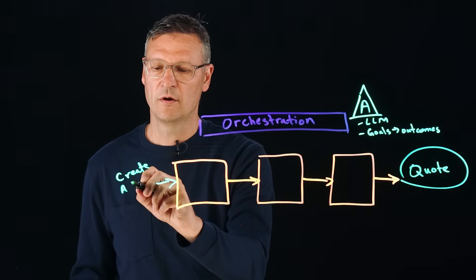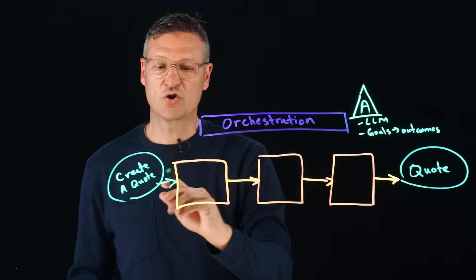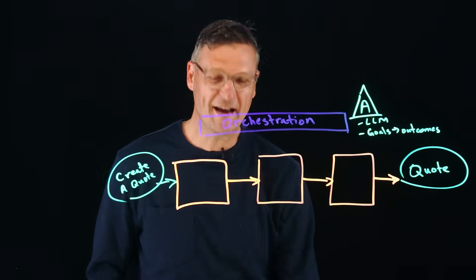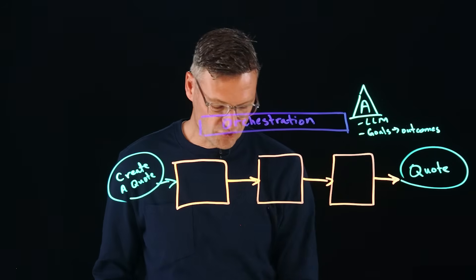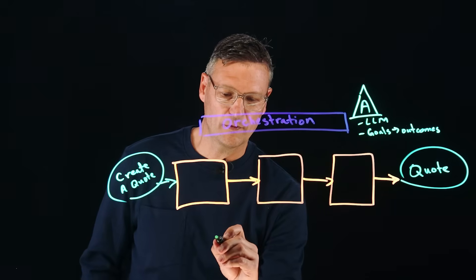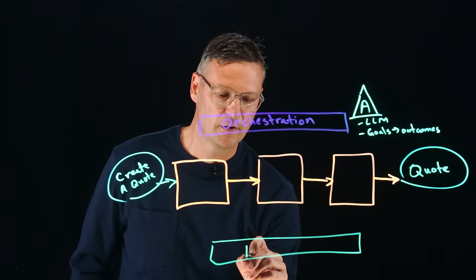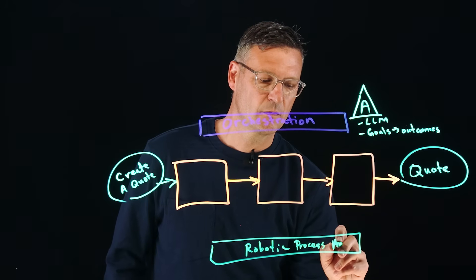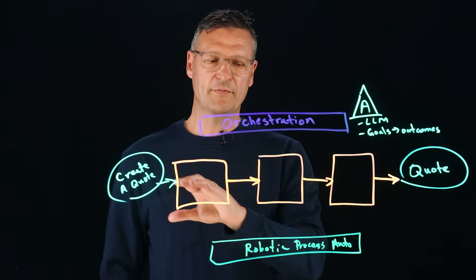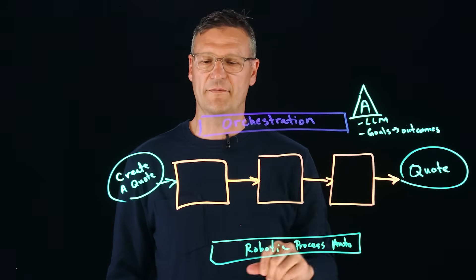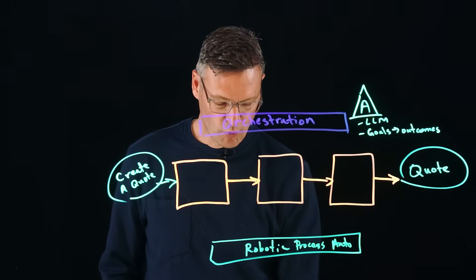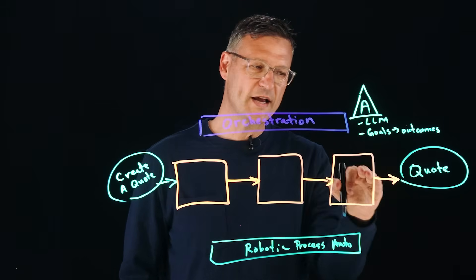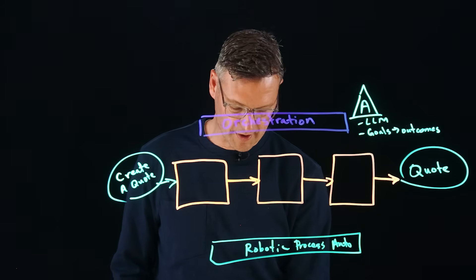Let's take an example of a process where the thing that we want out is a customer quote. So an actual quote that we can send to a customer. And the thing that we're putting in is a goal, and the goal is to create a quote. We want to create a commercial quote that's good enough so that our sales team can send that quote out to a customer and not get us in trouble with all the finance people and the product people. So the way to think about orchestration versus robotic process automation, ultimately they're similar in that we want to understand our process.